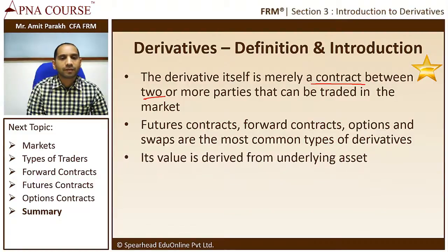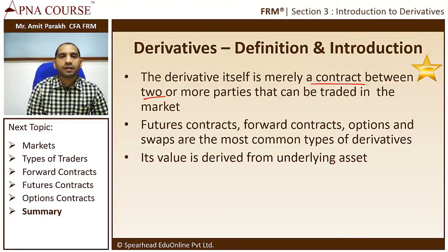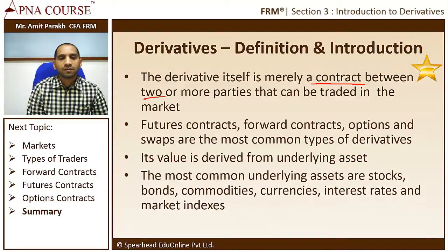Being a contract, the value of a derivative is derived from an underlying asset — it doesn't create value by itself. The underlying asset could be a stock, a bond, an index, a currency, or an interest rate — essentially a variable or an asset with a varying value. The most common underlying assets are stocks, bonds, commodities, currencies, interest rates, and market indices.